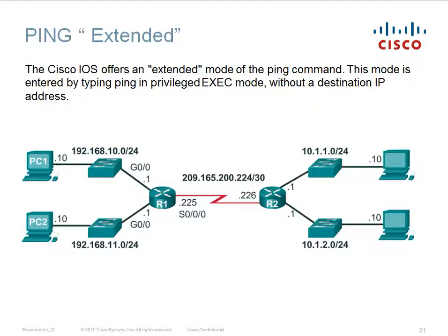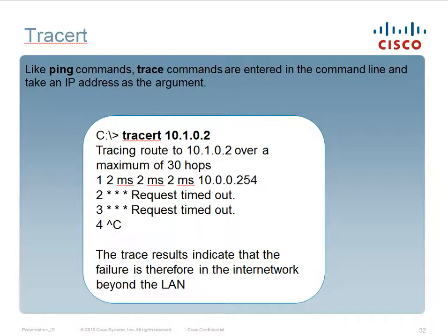There is also an extended ping. The Cisco IOS offers an extended mode of the ping command, entered by typing 'ping' in privileged exec mode without a destination IP address, which sends to every device on the network. The traceroute command, like ping, is entered in the command line and takes an IP address as the argument. What the traceroute command does is not only test connectivity, but test connectivity at each step of the way. As shown in the example, the trace result indicates the failure is in the connection to the internet beyond the LAN, meaning only one hop was reached and the rest could not be contacted.